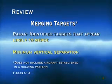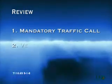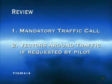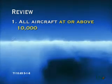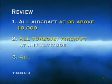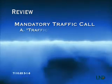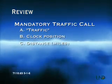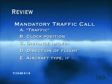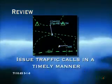Now for a quick review. Merging targets are defined as targets that appear likely to merge and are at the vertical separation minimum. Merging target procedures consist of two elements in the terminal radar environment: a mandatory traffic call, and vectors if requested by the pilot. These procedures must be applied — unless the aircraft are established in a holding pattern — to all aircraft at or above 10,000 feet, all turbojet aircraft regardless of altitude, and all presidential aircraft regardless of altitude. The traffic call consists of: the word 'traffic,' the location of the traffic in relation to the aircraft you are talking to, the distance, the direction of flight, the aircraft type and the word 'heavy' if needed, and the altitude of the traffic. Traffic calls must be made in a timely fashion to allow the pilot to determine if a vector is necessary.